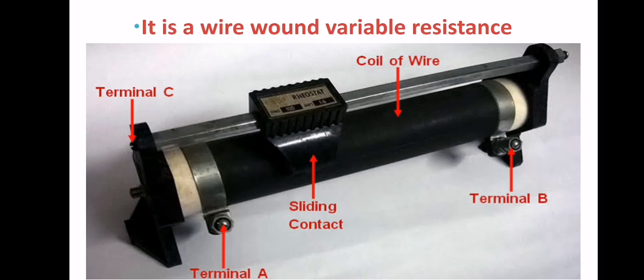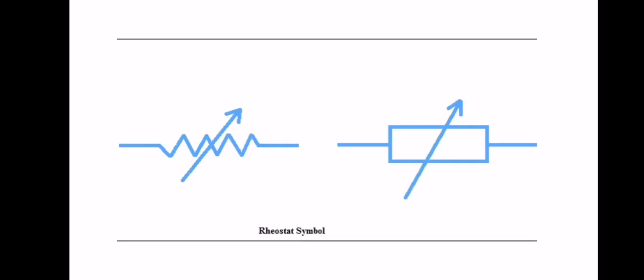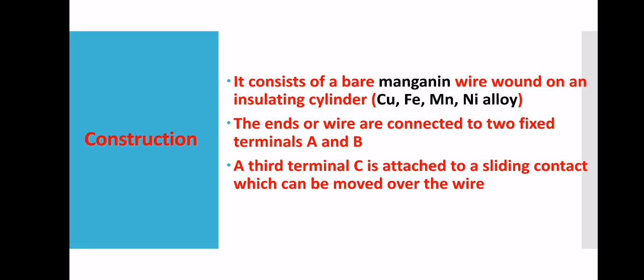In this case, the wire is wound on an insulating cylinder, which can be made of plastic, wood, or glass. This is the symbol for the rheostat. Regarding its construction: it consists of a bare manganin wire wound on an insulating cylinder. Manganin is basically an alloy — a mixture of copper, iron, manganese, and nickel. There are two ends — terminals A and B — which are the fixed terminals, and the third terminal C is attached to the sliding contact which can be moved on the wire.